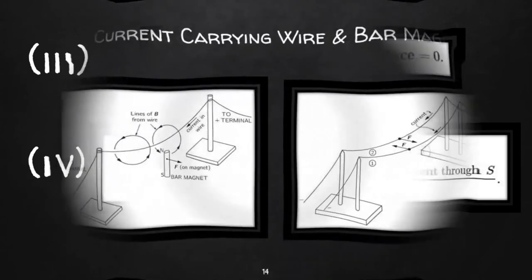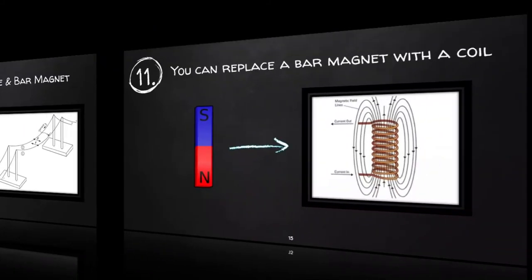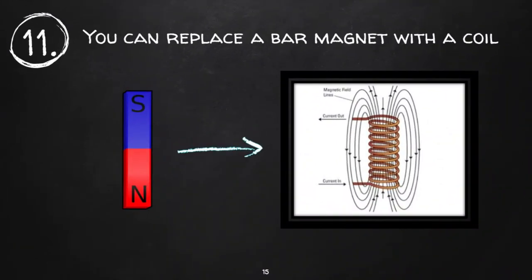Suppose you hang a current-carrying wire above a bar magnet—they will exert force on each other. The same thing happens when you place two current-carrying wires side by side. When the currents are in the same direction, the wires attract; when the currents are in opposite directions, they repel.